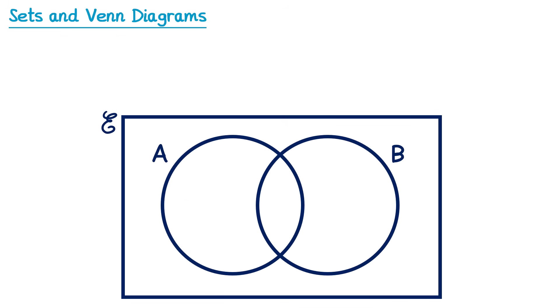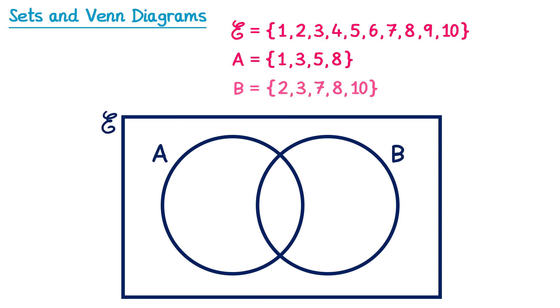Let's have a look at a second example. Imagine we had the universal set from 1 to 10, and we had set A and set B, and we were asked to put them into a Venn diagram. The first thing I would do is look for numbers that are inside both set A and set B, since they need to go in the overlapping section in the middle. The number 3 is in both sets, so cross it out and place it in the middle. The number 8 is also in both sets, so we place that in the middle too. Then for just set A, the number 1 goes on the left side, and so does 5.